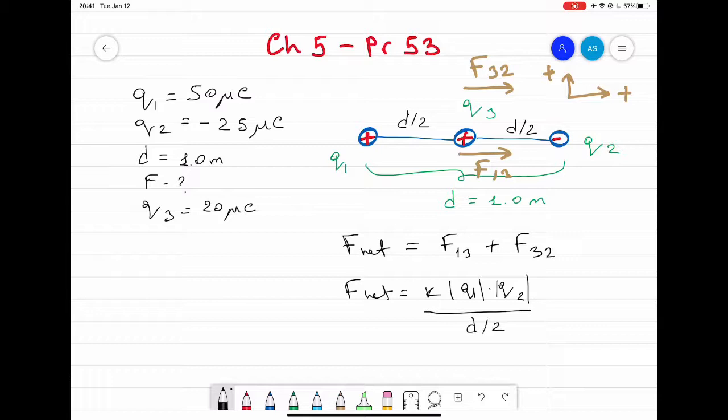Then plus k modulus of q3 times q2 divided by again d over 2 squared.